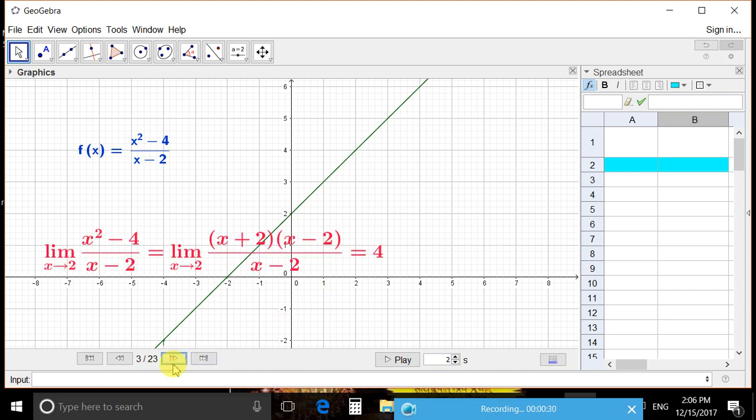If you are finding lim(x→2) (x² - 4)/(x - 2), it will be lim(x→2) [(x + 2)(x - 2)]/(x - 2). x - 2 will get cancelled because x is not equal to 2, and therefore the final answer is 4.